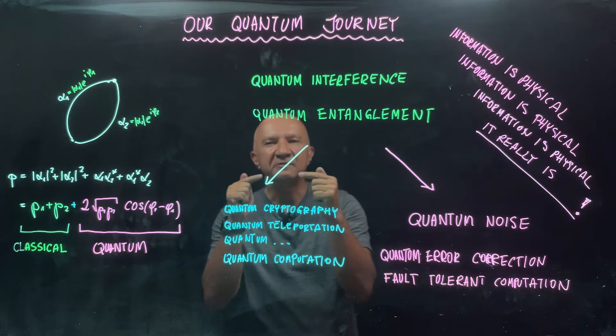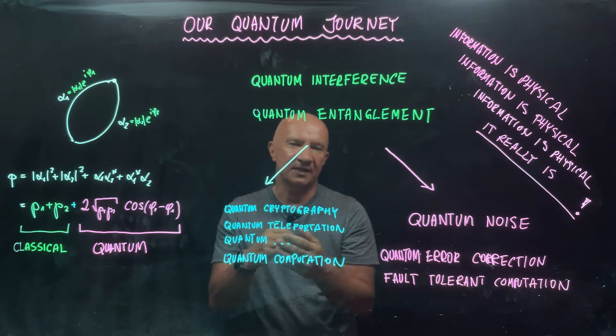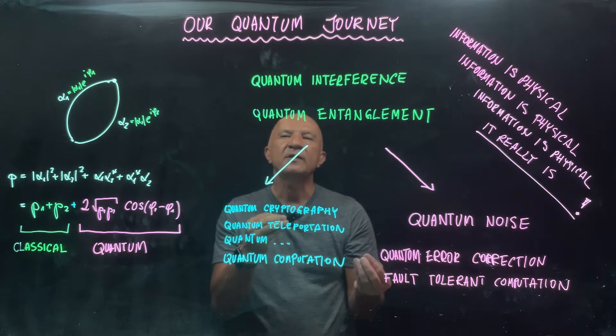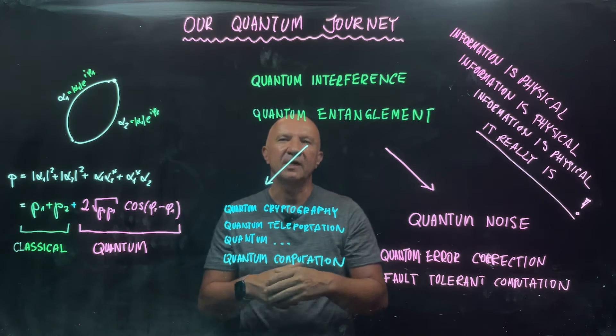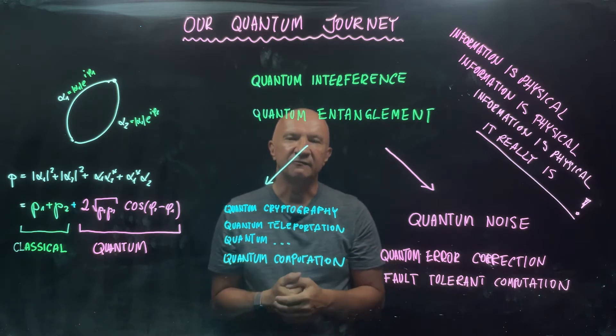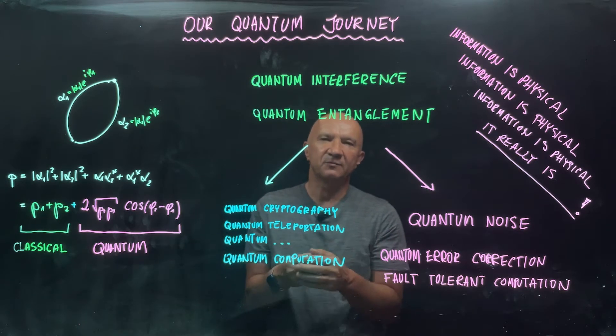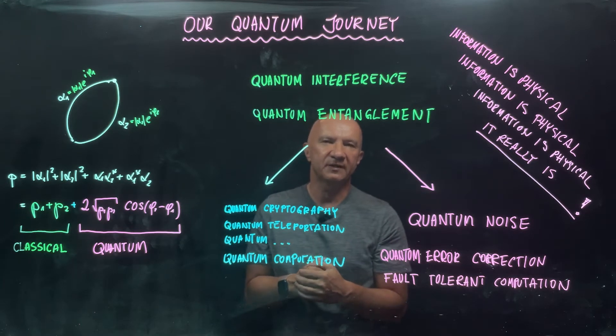So what you can really do with information depends on this underlying physics. So when we include quantum phenomena to our repertoire of information processing, we can do more because there are certain quantum phenomena we can use to our advantage.